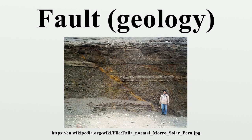Strike-slip faults have a near-vertical surface, and the foot wall moves either left, right, or laterally with very little vertical motion. Strike-slip faults with left-lateral motion are also known as sinistral faults, and those with right-lateral motion are also known as dextral faults. Each is defined by the direction of movement of the ground on the opposite side of the fault from an observer.